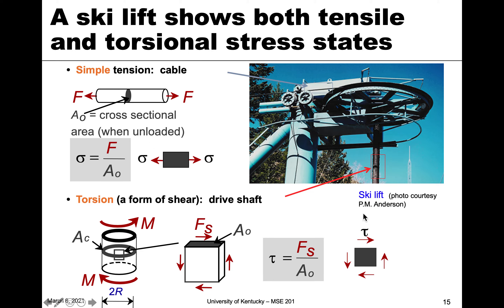Also on a ski lift, there's a rotating shaft — the drive shaft that causes the ski lift to move up or down. That rotation of the shaft is an example of torsion, where a moment causes it to rotate. The torsional stress tau equals the force Fs divided by the area. It's always force over area, but the direction and vector of those forces is what matters.